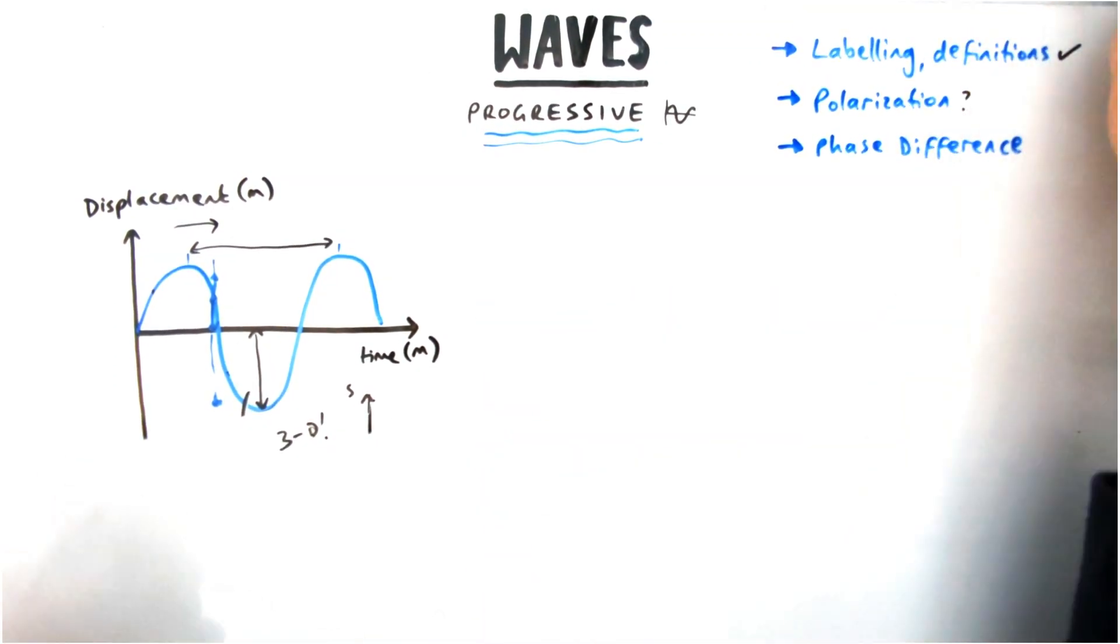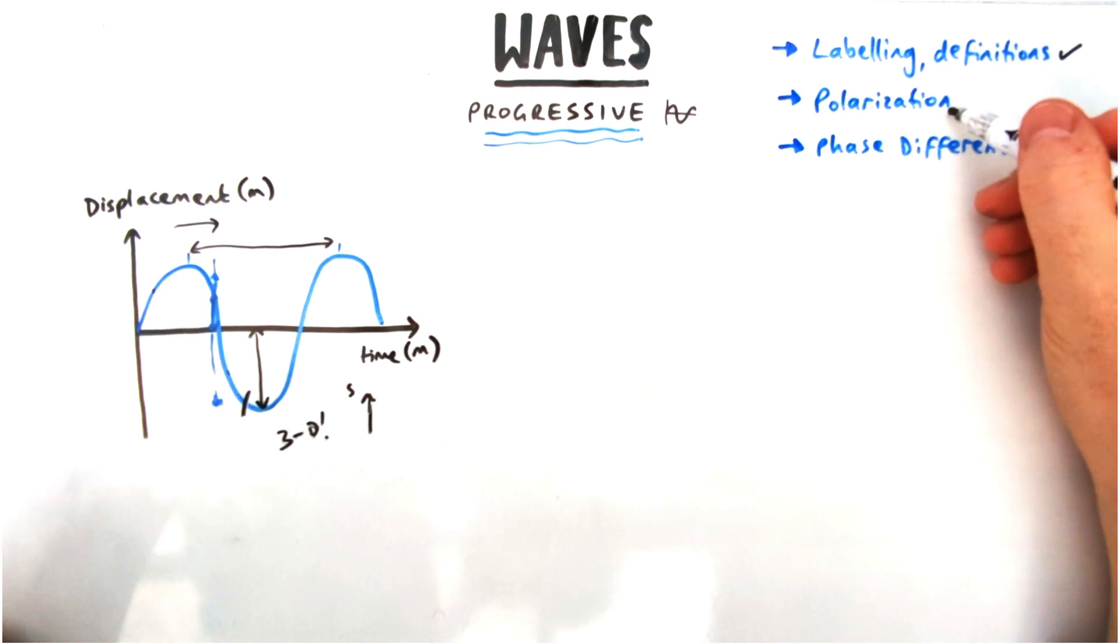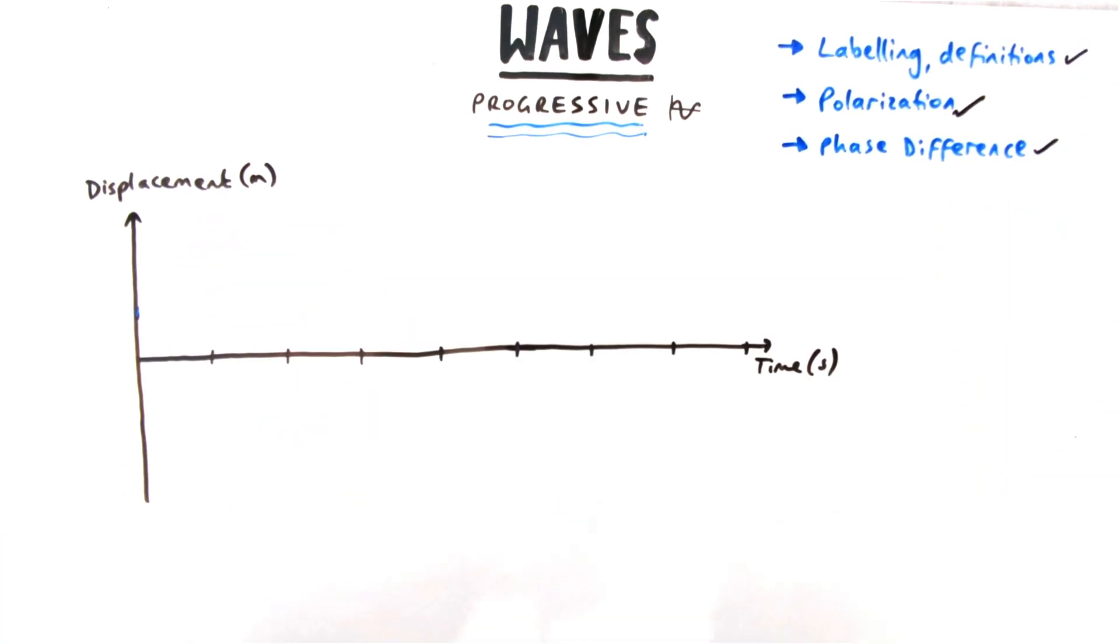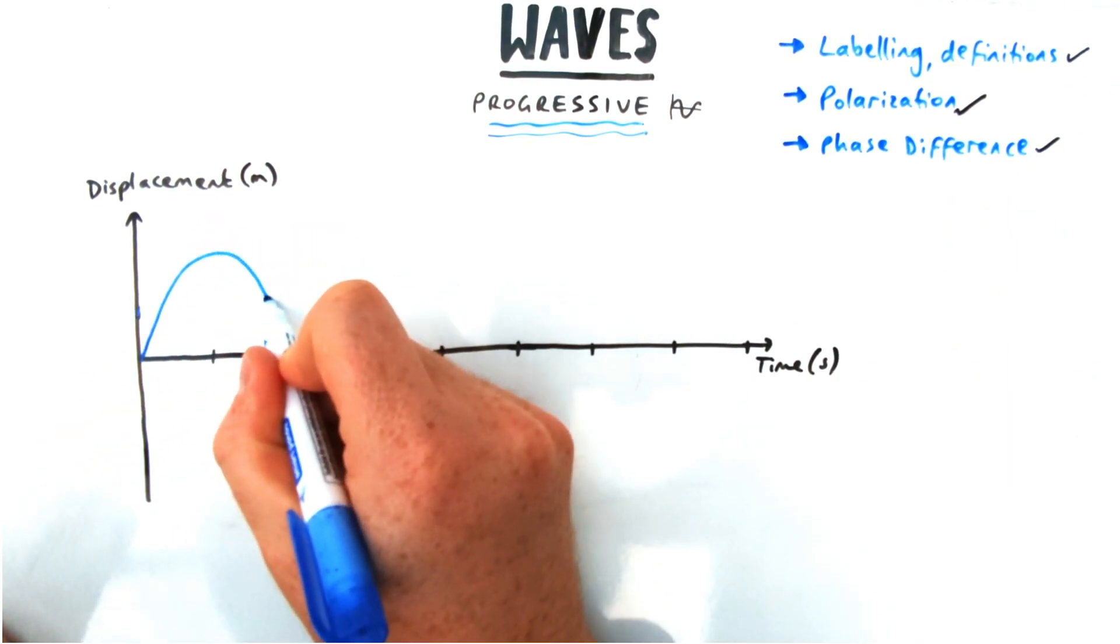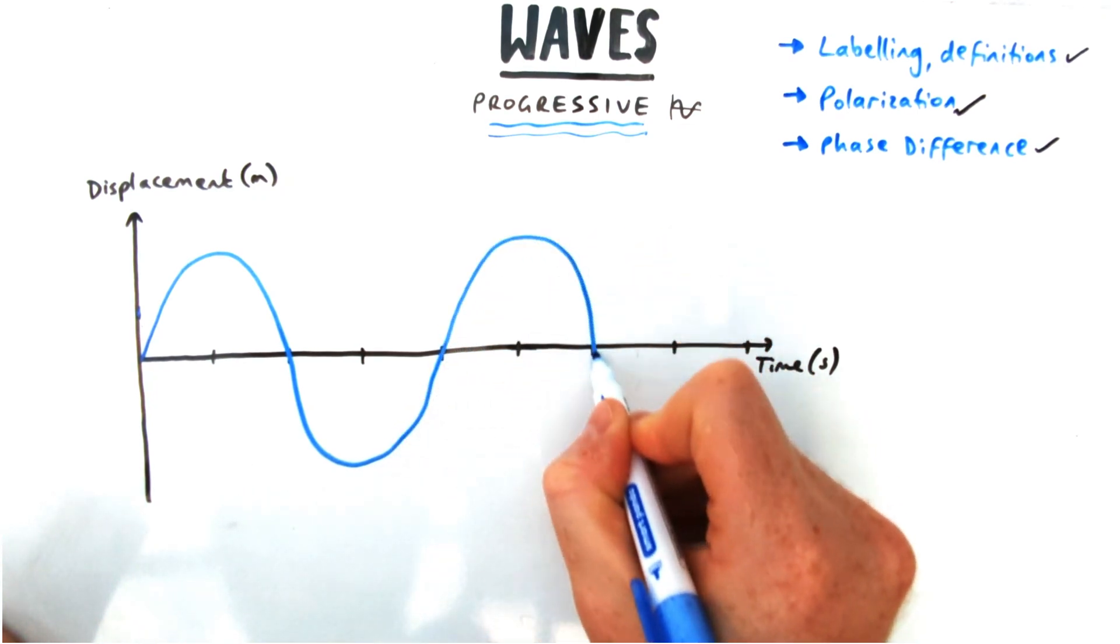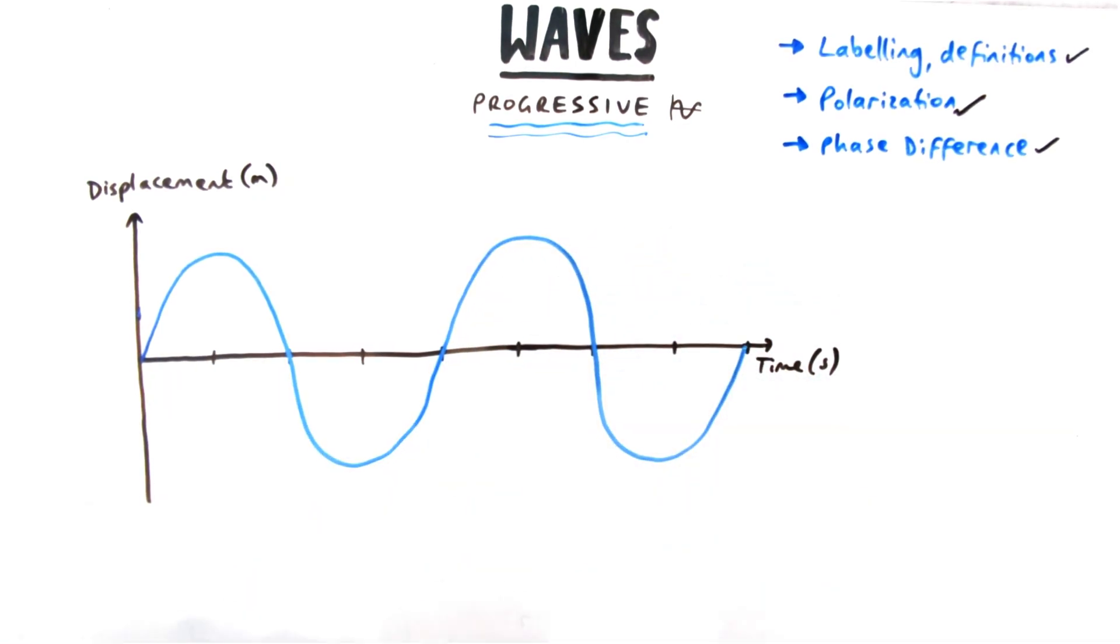That's polarization. Let's have a look at phase difference, or phase in general, which comes up multiple times in A-level when we talk about waves. Let's draw a wave on the screen again, and this time I've extended it a bit with some notches so I can draw a second wave on.